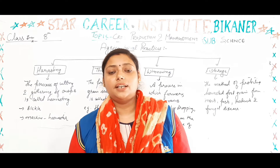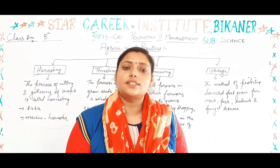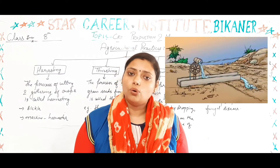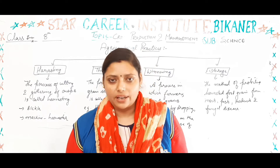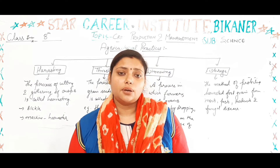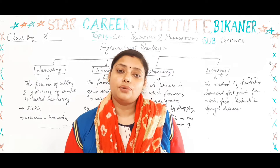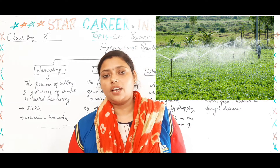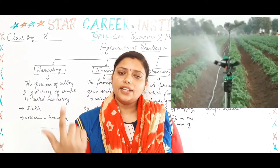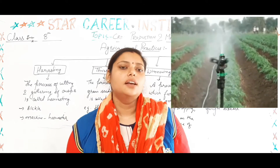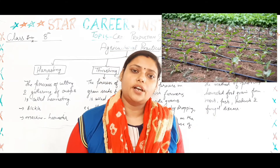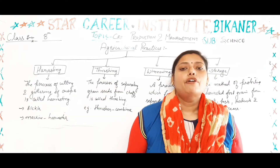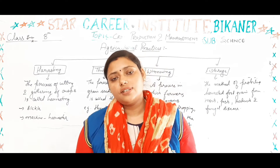In traditional methods, we have seen the different types that are used. Then we looked at modern methods. In modern methods, we covered the sprinkler system and drip system. We also discussed the advantages and disadvantages of irrigation.